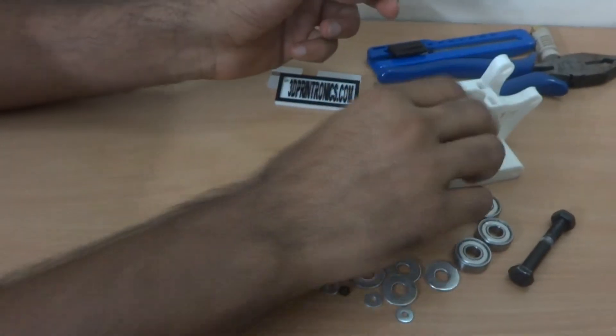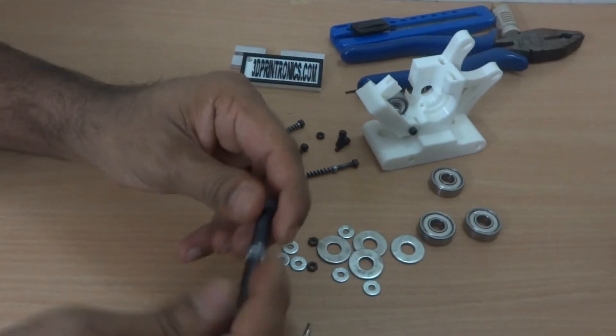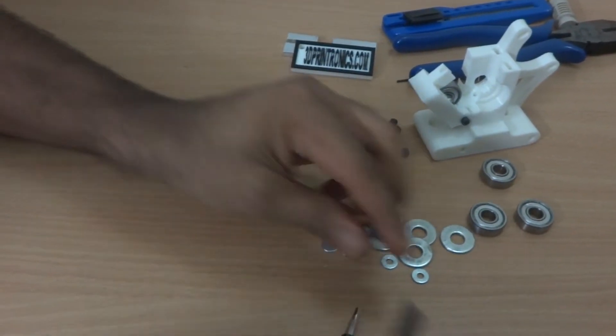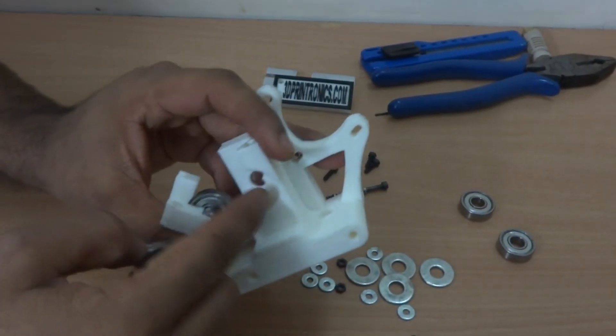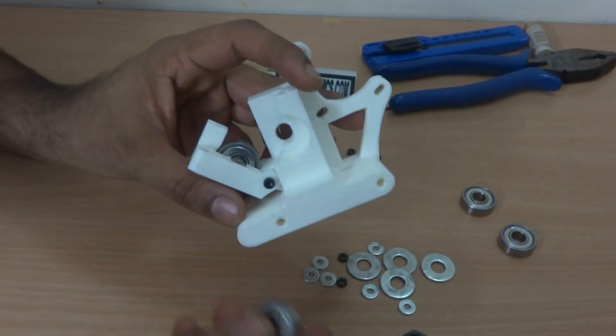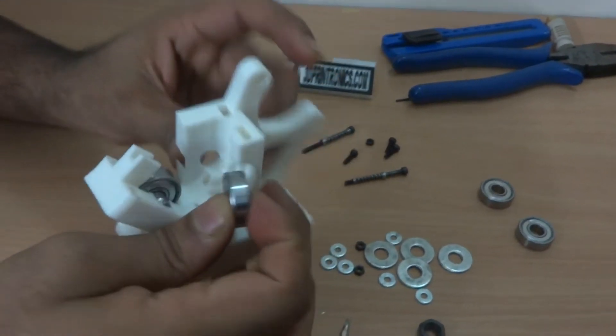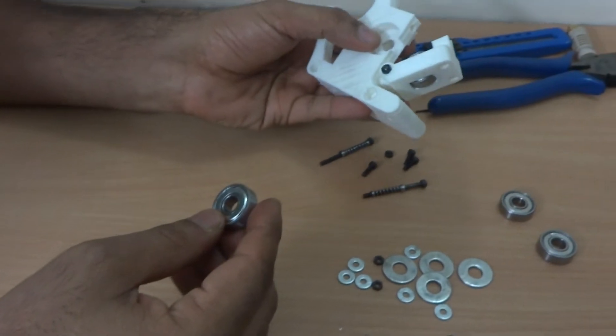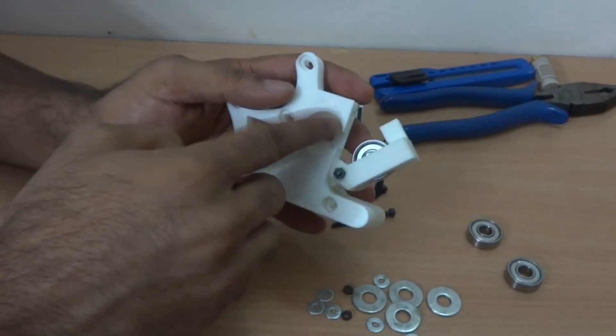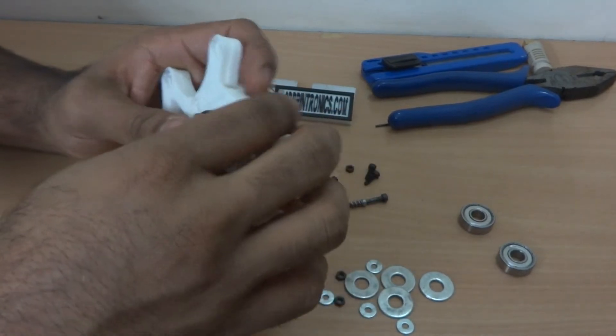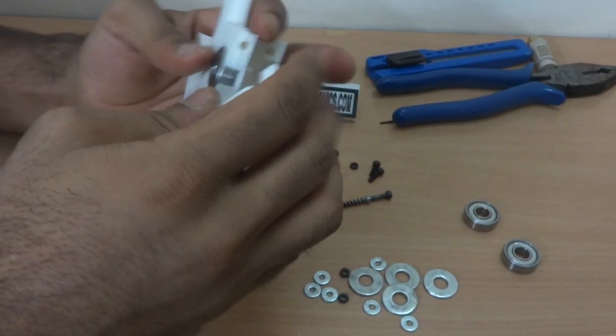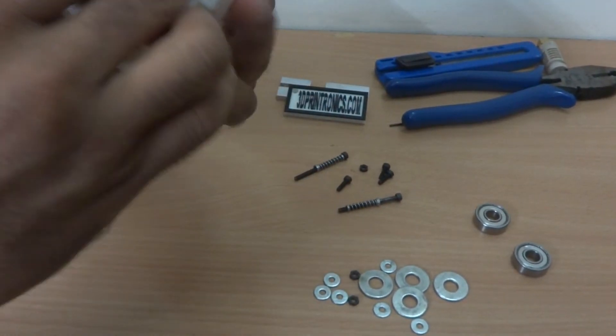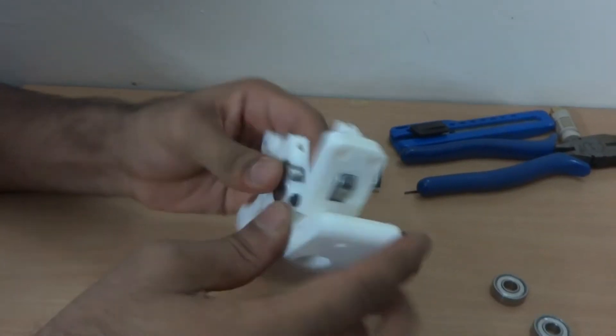Now take the hob bolt. We have to install one 608 double Z bearing here. This area has been cleaned and it has been beveled so it would go pretty easily inside. Just press it inside more. It should settle down properly.